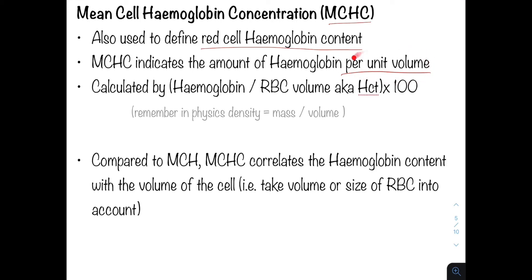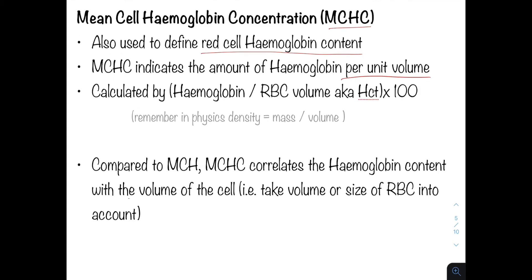Here the MCHC is per unit of volume. So essentially it is a measurement of hemoglobin density. And if you remember from physics, density equals mass divided by volume. So in this case the MCHC is hemoglobin divided by red cell volume or the hematocrit.